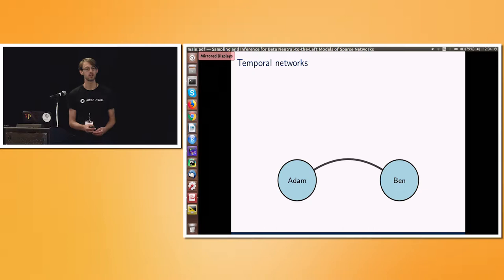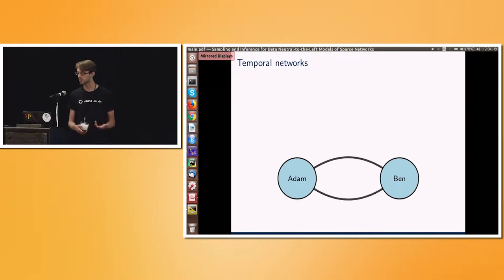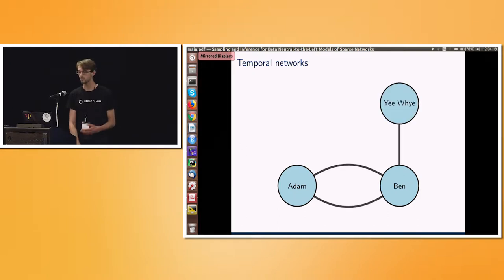So let's start from the beginning. We're talking about temporal networks. Those are the networks we're trying to model, and they're in discrete time where we add one edge at each time step. Here's a simple example of a social network where vertices represent people, edges maybe represent messages. So at the second time step, maybe Ben and I exchange a second message. At the third time step, we see a new vertex enter the network as somebody new begins communicating.